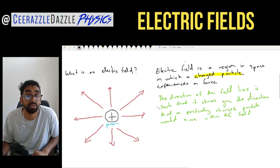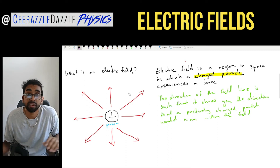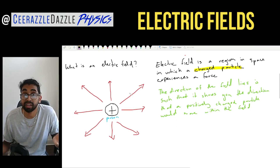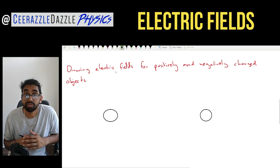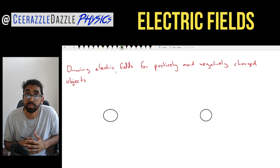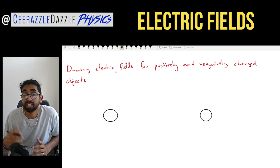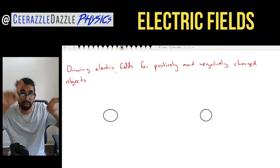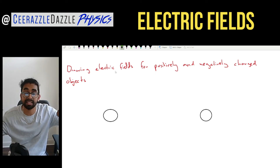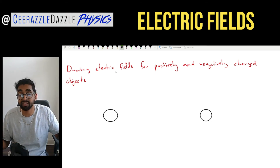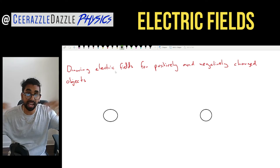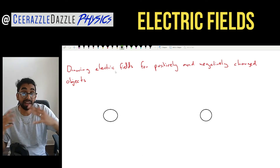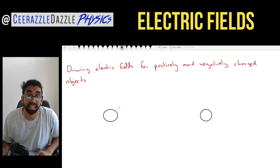Make sure we're happy with those two things. Let's move on to drawing electric fields for positively and negatively charged objects. We did it for a positively charged object — we know the arrows go away from it. But for a negatively charged object, the arrows go into it. Here I've got two objects.